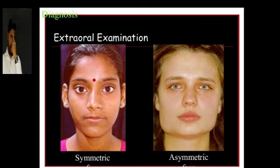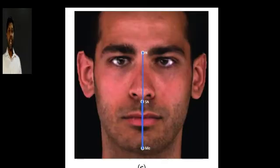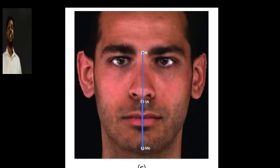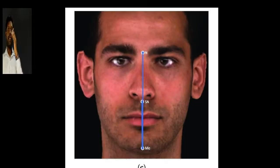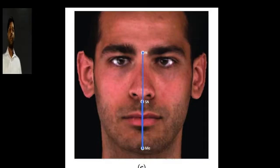Coming to facial profile — to assess it you need three points: glabella (between the eyebrows), soft tissue point A (the deepest curvature of the upper lip, also called the philtrum), and soft tissue point B (the most anterior point of the chin, also called pogonion). By drawing an imaginary line between these three points, you can determine whether the patient has a straight, convex, or concave profile, which correlates with Class I, II, or III malocclusion.